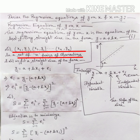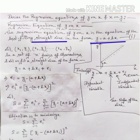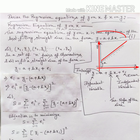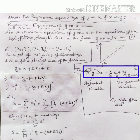We know the general equation of the straight line is y = a + bx, where a and b are constants. The regression equation of y on x fits a straight line of this form using the method of least squares. Here x is considered to be the independent variable and y is the dependent variable — the value of y is obtained when the value of x is given.